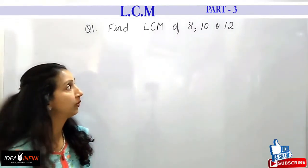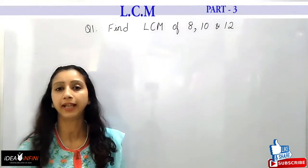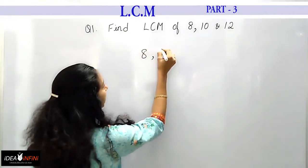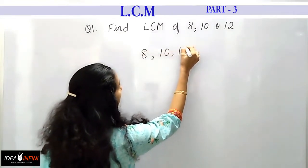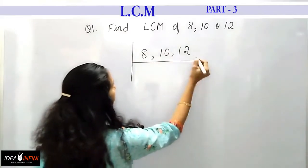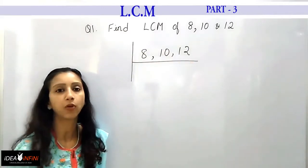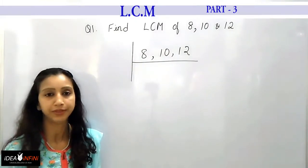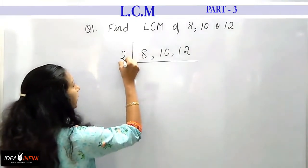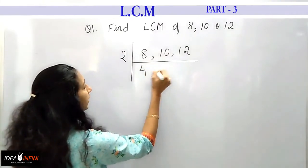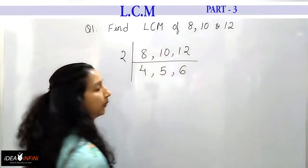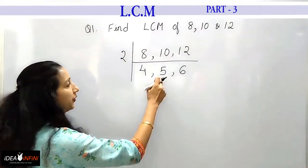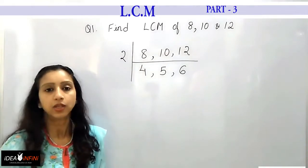Here I have to find out the LCM of 8, 10, and 12. Let's start with the prime factorization method. I write all three numbers together and then start finding out the common factor, which should be the common factor of at least two of these numbers. As I can see, all three are even numbers, so I put a 2 here: 2 × 4 = 8, 2 × 5 = 10, 2 × 6 = 12.